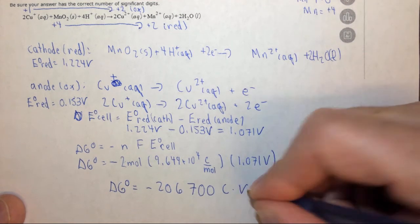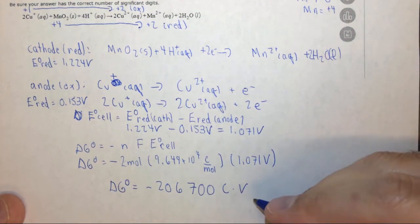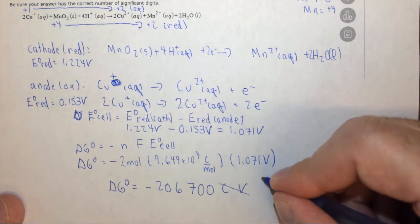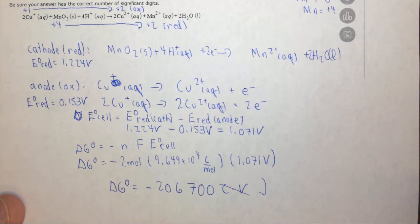Delta G equals minus 2.067 times 10 to the 5 coulombs times volts. And a coulomb times a volt is the same thing as a joule. One coulomb volt is one joule.